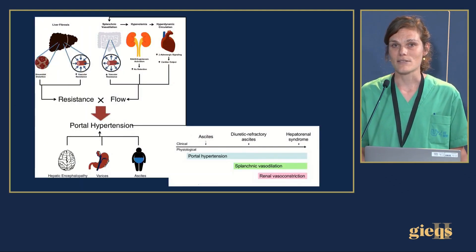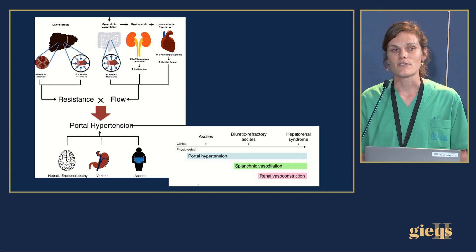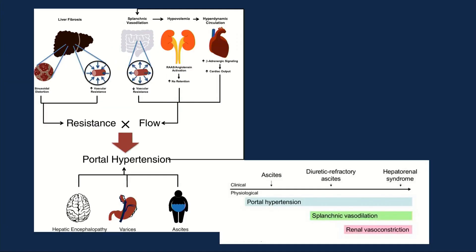Portal hypertension results from elevated resistance — for example, because of sinusoidal distortion in liver fibrosis — and also elevated vascular resistance. There is also an increase in flow because of splanchnic vasodilatation resulting in hypovolemia, activation of the RAS and angiotensin system, sodium retention, and hyperdynamic circulation resulting in elevated cardiac output. In patients, we can see the results with symptoms of hepatic encephalopathy, varices, and ascites.